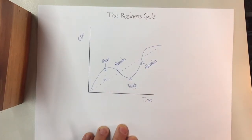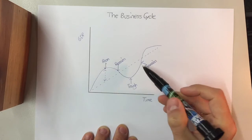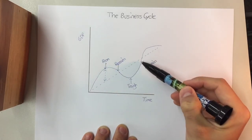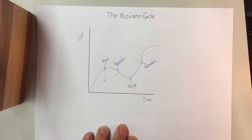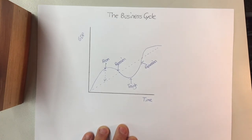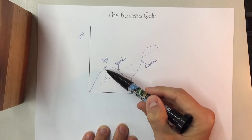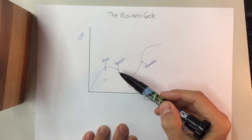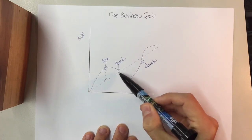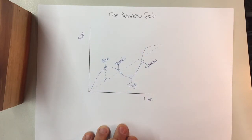And this is when things start to pick up again. And generally what will happen is that expansion will move us back into a boom where we go above our output and the cycle continues. What the government will do, and we'll look at this later on, is the government implements measures to try and shrink these gaps so that the levels are far less extreme.